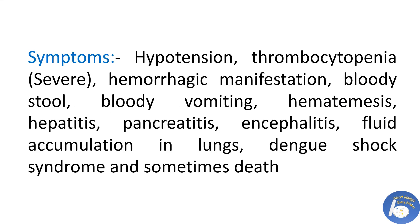Within a few hours of the critical phase, the patient develops severe dengue symptoms including hypotension (decreased blood pressure), thrombocytopenia, and hemorrhagic manifestations such as bleeding from vessels, bloody stool, hematemesis (bloody vomit), hepatitis (swelling of the liver), pancreatitis (inflammation of the pancreas), and encephalitis (swelling of the brain). There is also dengue shock syndrome, which involves multiple organ failure affecting the liver, kidney, pancreas, and other organs. In some cases, death may occur.